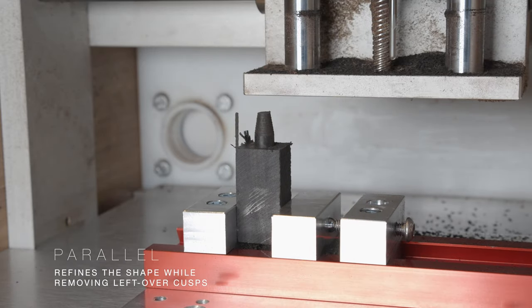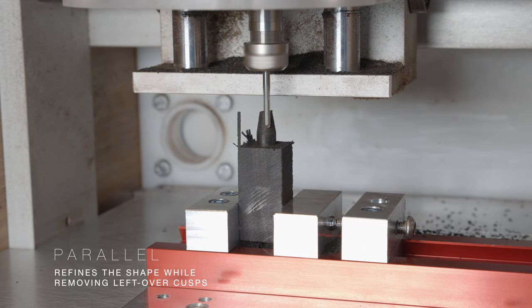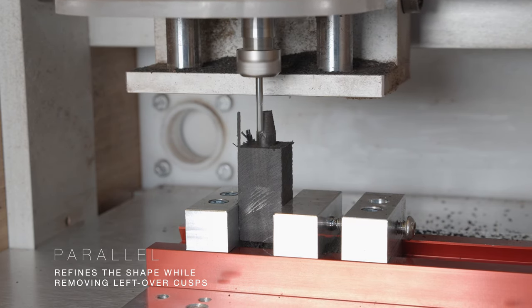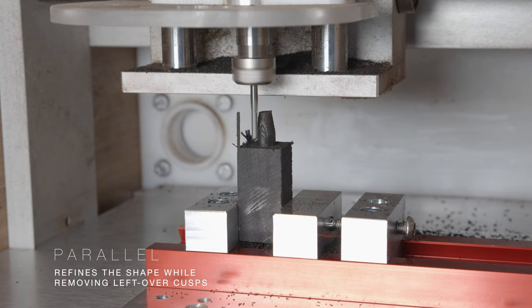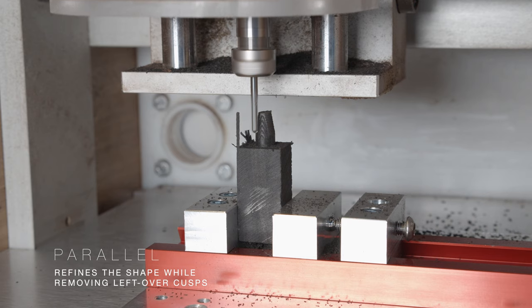At this point, we switch to a ball end mill and perform a parallel operation. What this does is trace the final shape of the switch tip from the top, while removing all of the leftover material from the previous adaptive clearing operation.